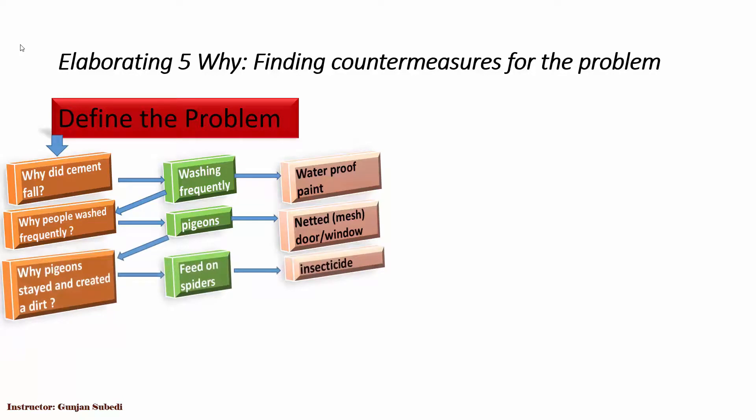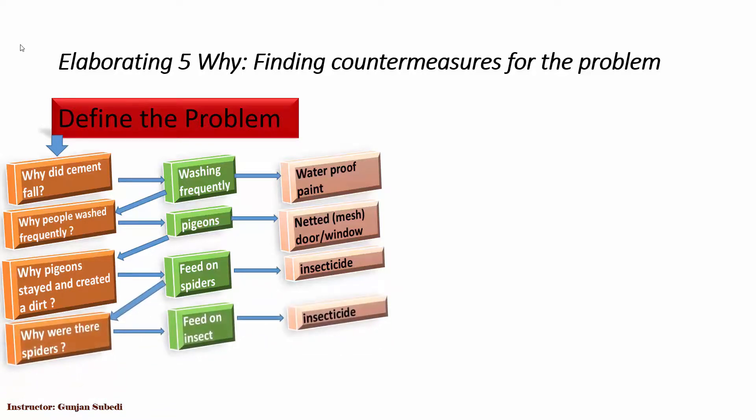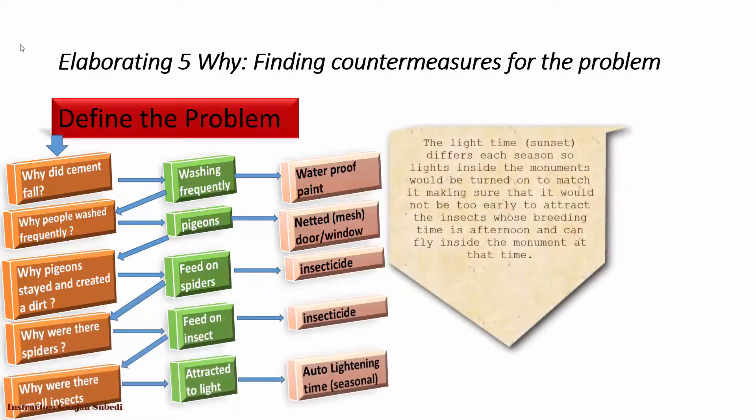We would apply different insecticides periodically to make sure that no insects and spiders were inside the monument and birds would not stay there to feed on insects. And it was the same for other insects too. So why were there small insects? They were attracted towards light. The countermeasure that was applied at that time was just changing the lighting schedule to one hour later. We would automate the lighting process as per the need of the season because the light may differ in other seasons.